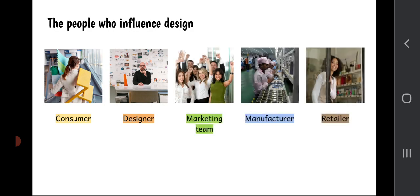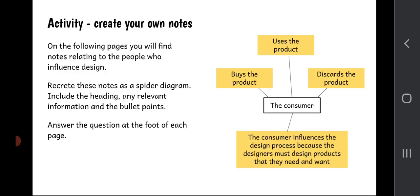In total we're going to look at five people who influence the design process: the consumer, the designer, the marketing team, the manufacturer and the retailer. All five of these have specialist and interconnected ways that they influence one another and the design process. A useful activity would be to pause the video and create your notes as a spider diagram with bullet points. There's a question at the foot of each slide asking you how this person may influence the rest of the design process — have a think about how they all interact with one another.